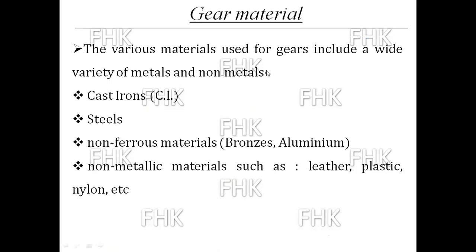The various materials used for gears include a wide variety of metals and non-metals. Generally, gears are manufactured using cast iron, steel, and non-ferrous materials like bronze and aluminum. Gears are also manufactured with non-metallic materials such as leather, plastic, nylon, etc. For example, in wristwatches or toys, the gears are typically manufactured from plastic or nylon material.